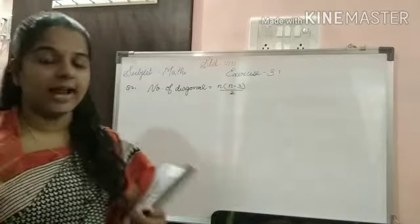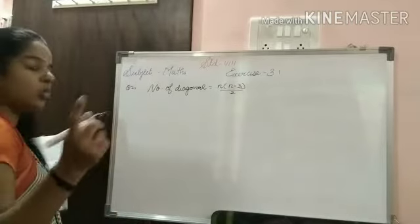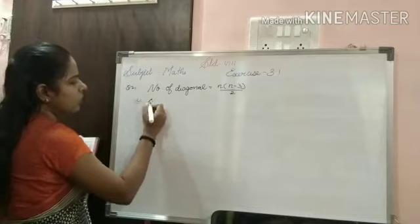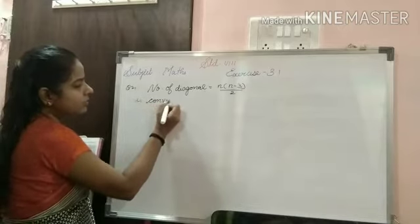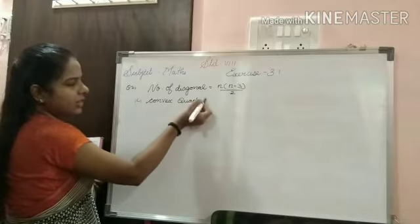Understand students, already I said that quadrilateral is having four sides. So first question I am solving, remaining two questions you can do it as homework. A convex quadrilateral.